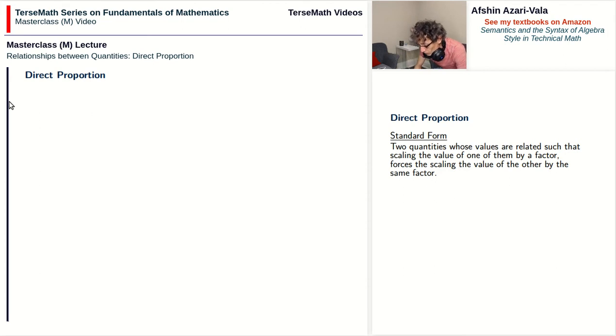These are direct proportion problems, and the equation for these kinds of problems is in the standard form: q2 is equal to k, which is a constant and has a known fixed value for a given problem. Then the key part is that we multiply by q1.